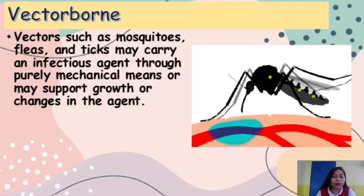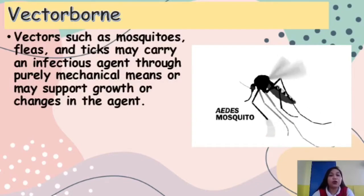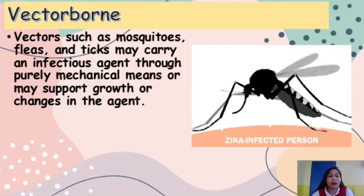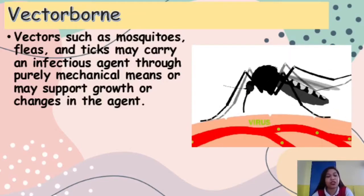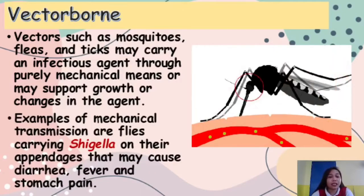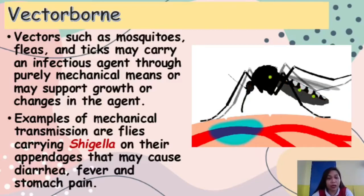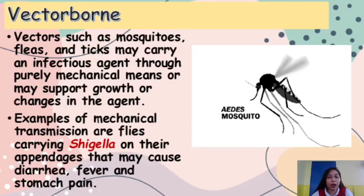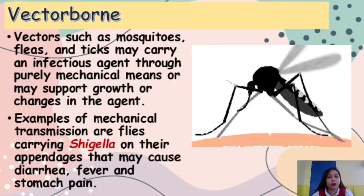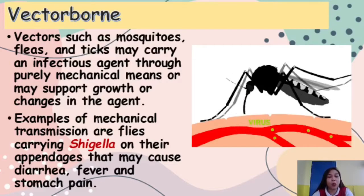Vectors such as mosquitoes, fleas, and ticks may carry an infectious agent through purely mechanical means, or may support growth or changes in the agent. An example of mechanical transmission is flies carrying Shigella on their appendages, which may cause diarrhea, fever, and stomach pain.